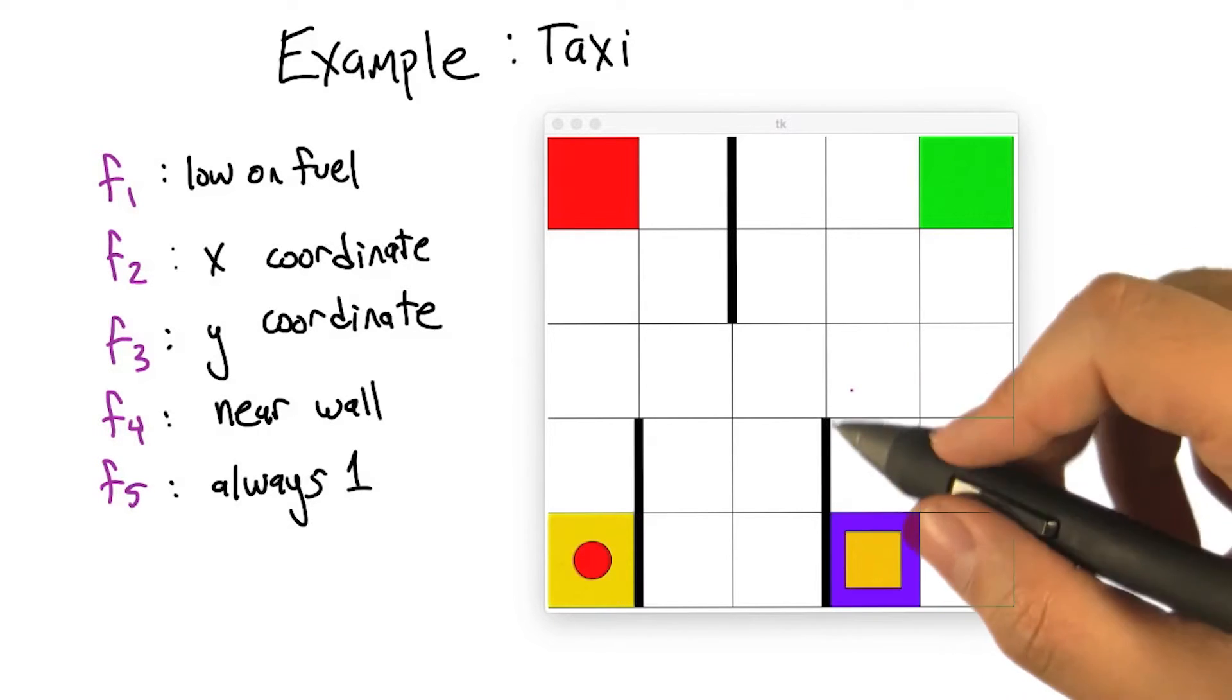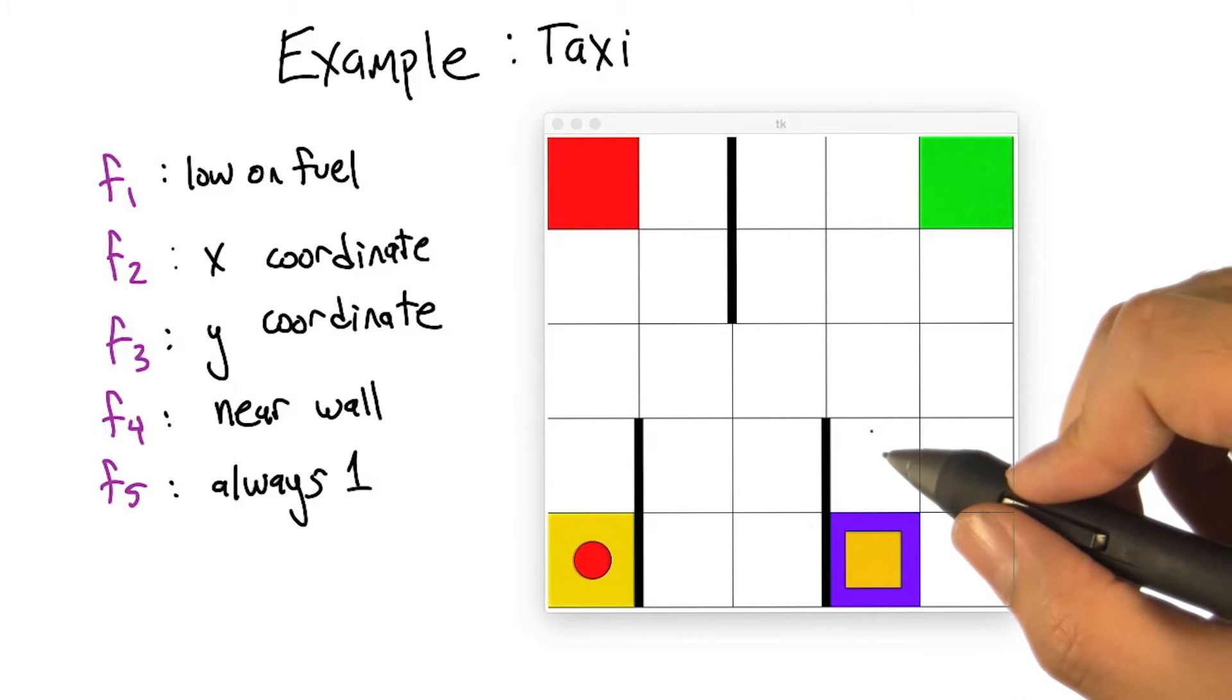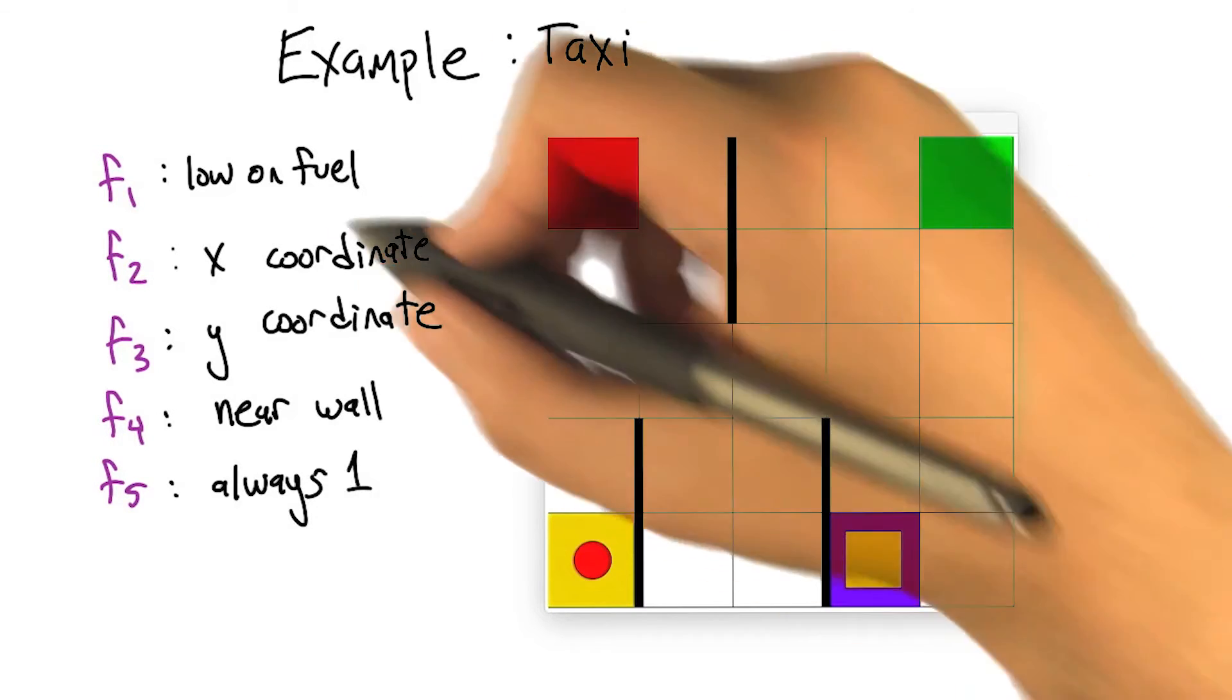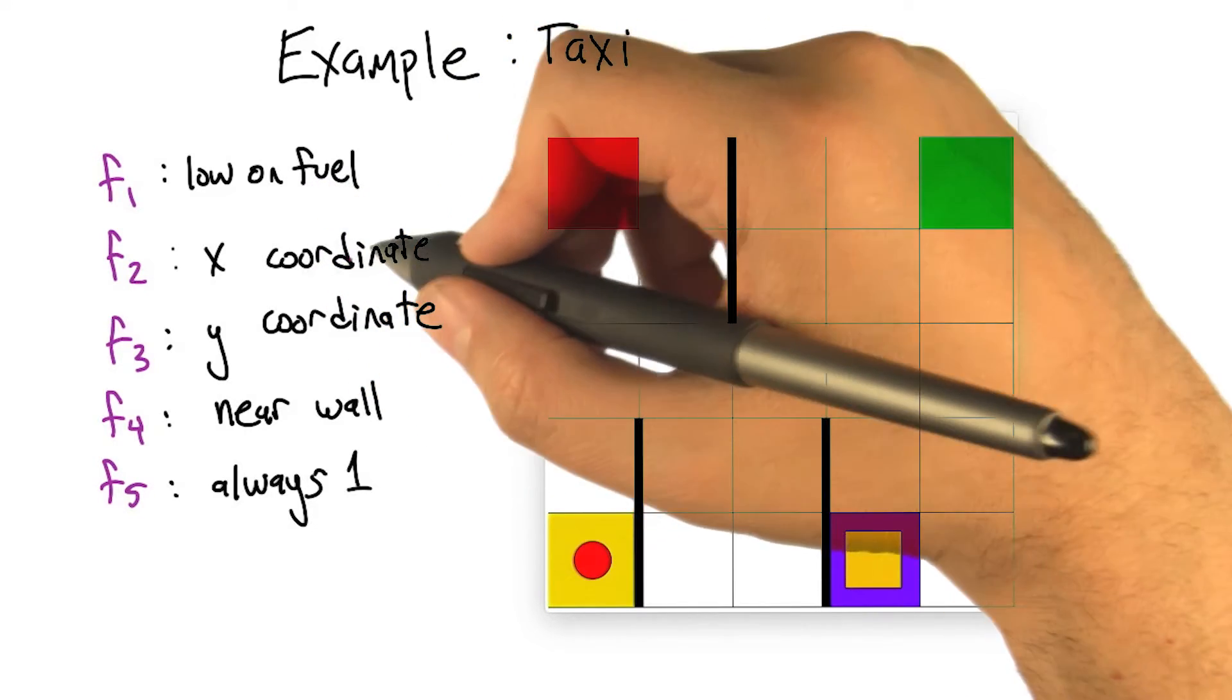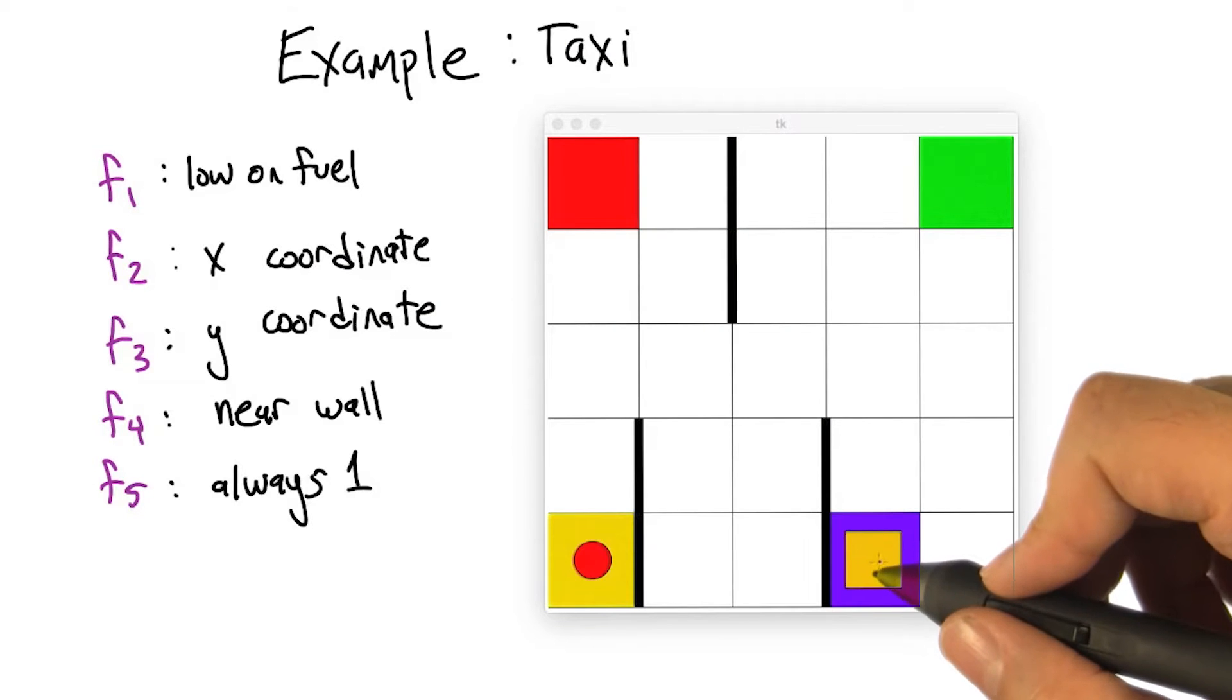But we can also imagine tagging each of the states with some particular value, like whether or not we're low on fuel. We didn't really have fuel when we talked about it, but whether we're low on fuel, what is the x-coordinate of the taxi cab, this thing here? What's the y-coordinate of the taxi cab?